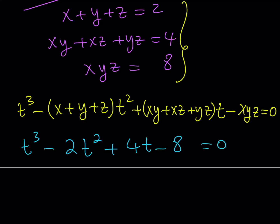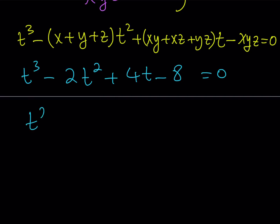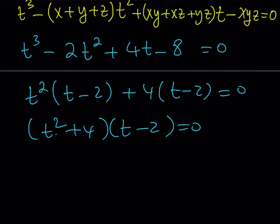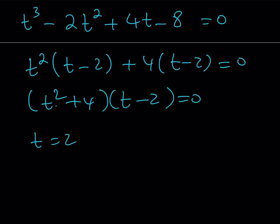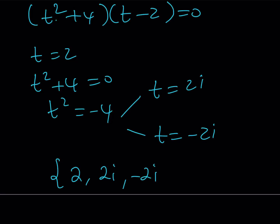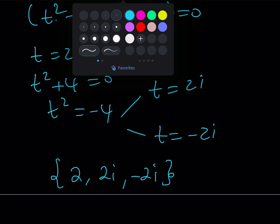And this is factorable by grouping — that's what makes it so awesome. I can write it as t squared times t minus 2, plus 4 times t minus 2, which brings us to t squared plus 4 times t minus 2 equals zero. This means t is equal to 2, so one of the roots is 2. The second part comes from t squared plus 4 equals zero, which means t squared is equal to negative 4, giving us t equal to 2i or negative 2i. You get basically all the possible solutions from Vieta's formulas. This is the end of the second method.